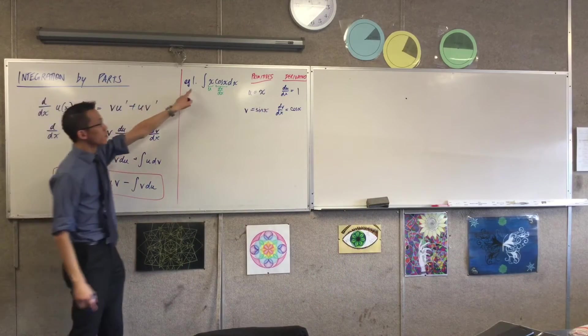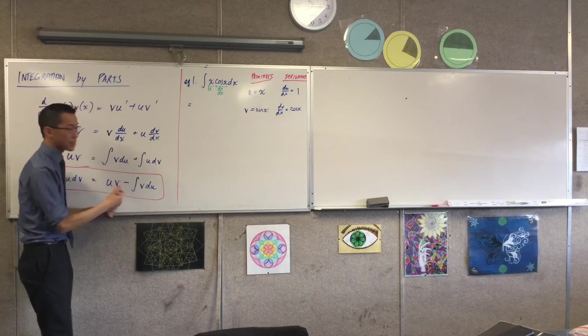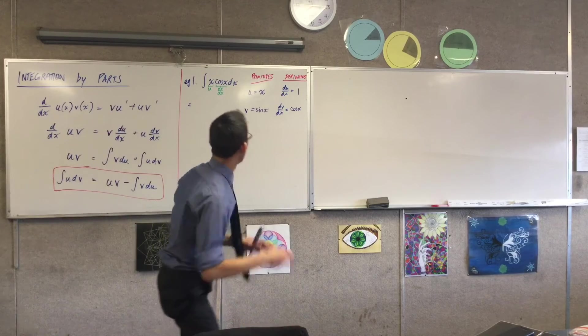This is the integral of u dv. This is the left-hand side. So now I'm going to write the right-hand side. I've got all of this together in a box over here.